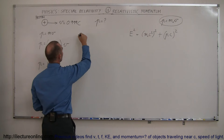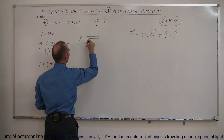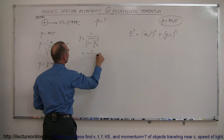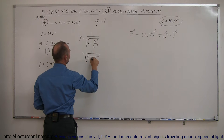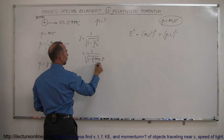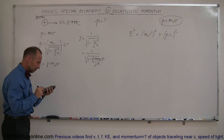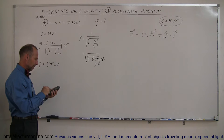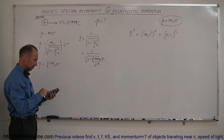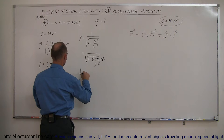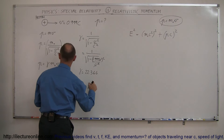Let's find out what gamma is equal to. Gamma equals 1 over the square root of 1 minus v-squared over c-squared. Plugging in the velocity, this is 1 over the square root of 1 minus (0.999c)² over c-squared. The c's cancel out. Using the calculator: we take 0.999, square it, subtract from 1, take the square root, then the inverse. We get gamma equal to 22.366.